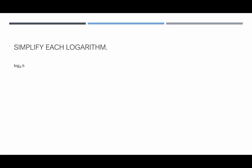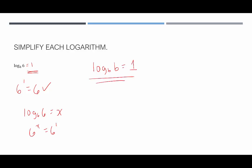For log base 6 of 6, we ask: 6 raised to what power is 6? The answer is 1, since 6 to the first power is 6. This illustrates a logarithmic identity: log base b of b equals 1.